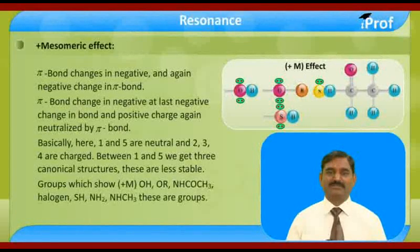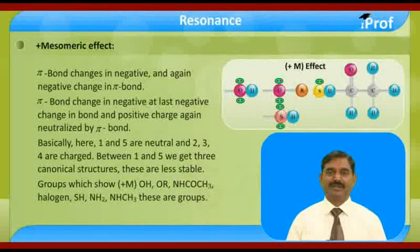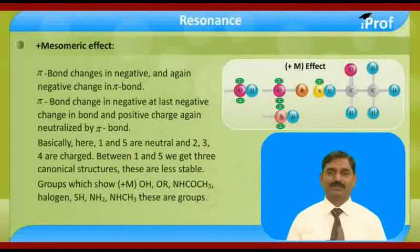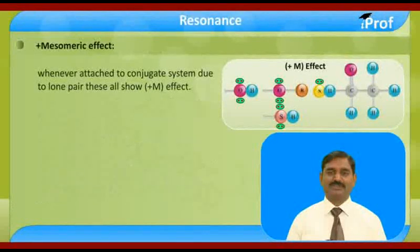Groups which show plus M effect include: OH, OR, NHCO, NH2, halogen, SH, NR2, and NH. These groups, whenever attached on a conjugate system, due to their lone pairs, show the plus M effect.